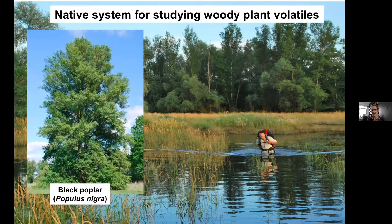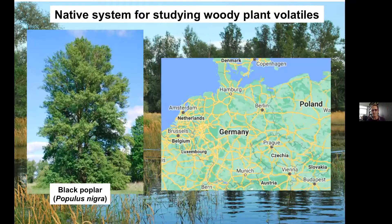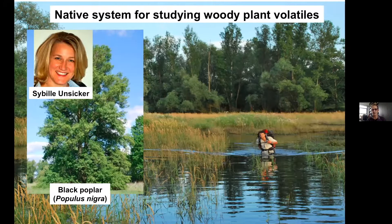The bigger dangers were actually the foxes and other animals in the floods, much more than the military ordnance. This is located on the eastern border of Germany with Poland, on the Oder river, on a nice island in the middle with all these poplar trees. Sibylla studied a number of volatiles in connection with different kinds of organisms, and I'll focus on three of her stories.